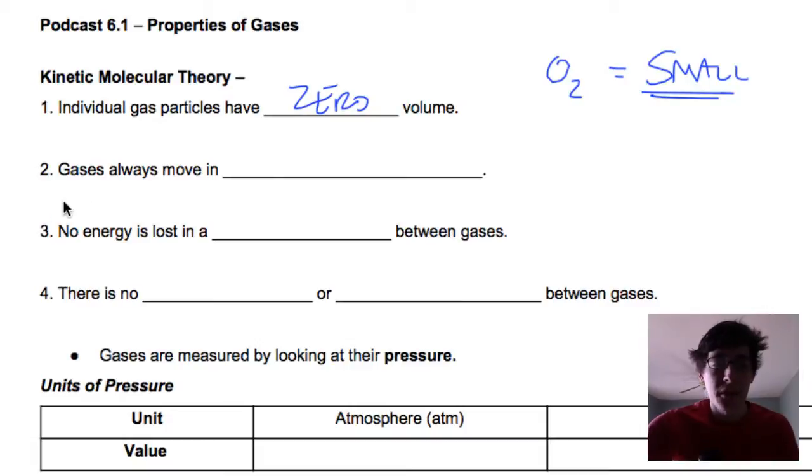The second thing we're assuming is that gases always move in straight lines. They don't loop around a room. Their entire velocity, all their momentum is going in a straight line. That does not change until they hit something else.